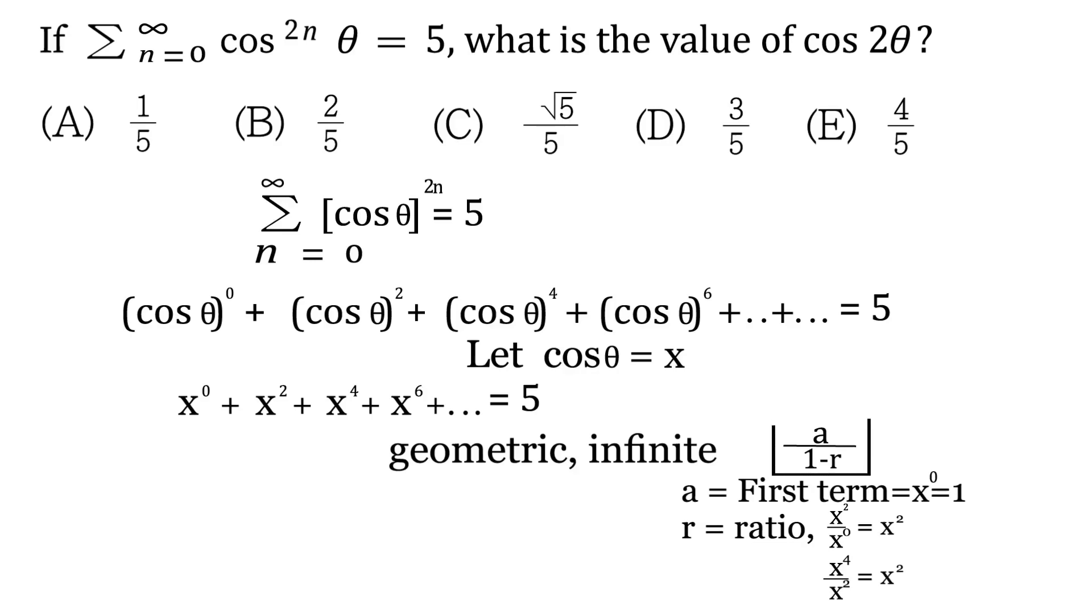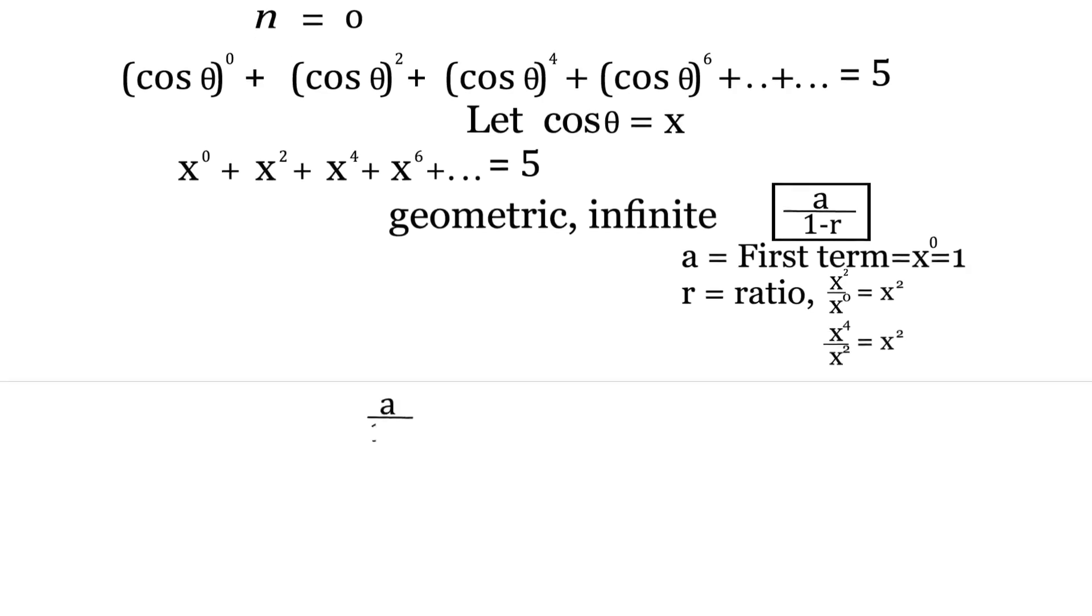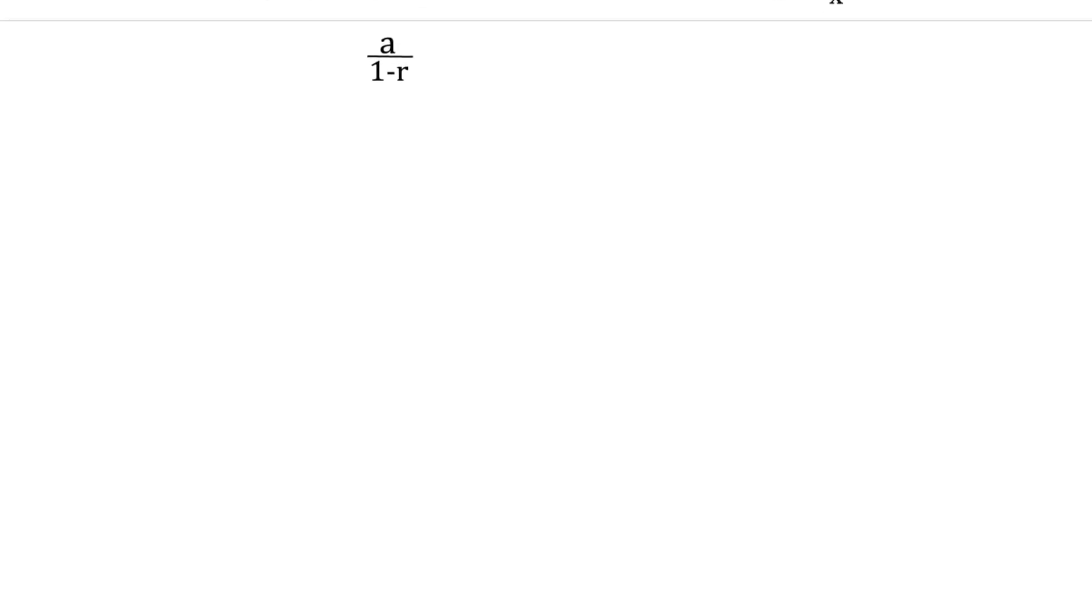So now let's use our cool formula here. a over 1 minus r, and that is all equal to 5. a in our case, we just figured out was 1. 1 minus r, r is x squared, and that equals 5.